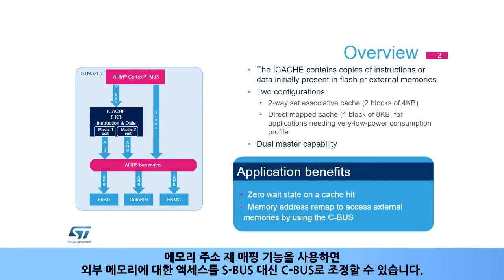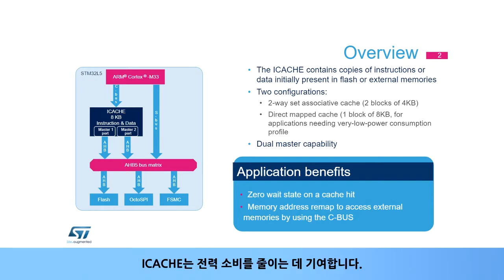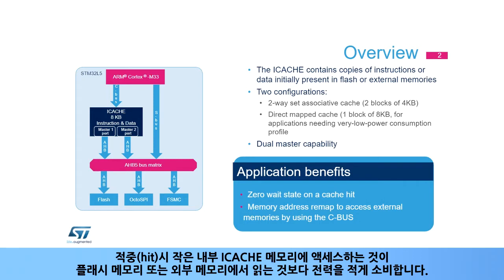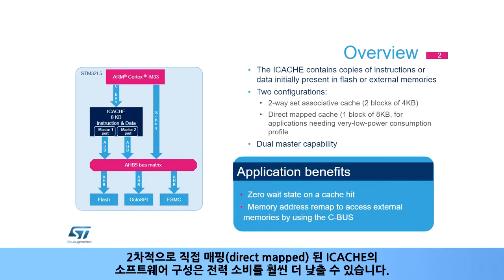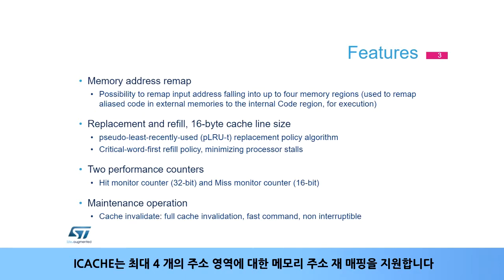The memory address remap capability enables accesses to external memories to be steered to the C bus instead of the S bus. The iCache contributes to reducing power consumption. Accessing the small internal iCache memory in case of a cache hit consumes less than reading from flash memory or external memories. A software configuration of iCache as direct mapped allows even lower power consumption.